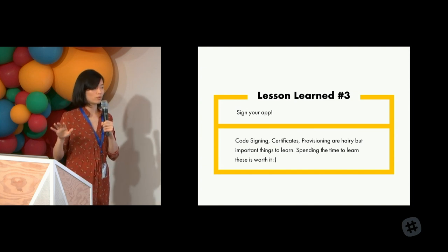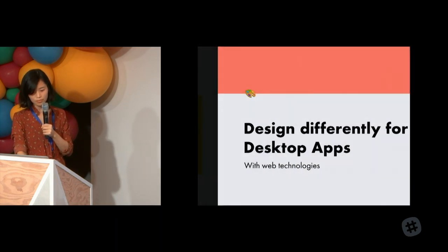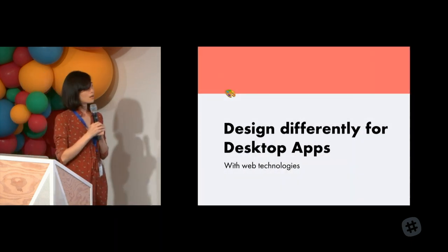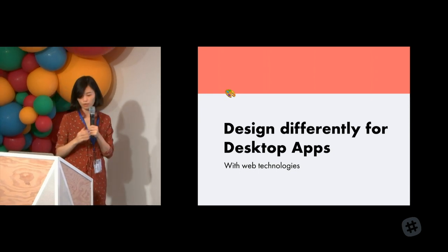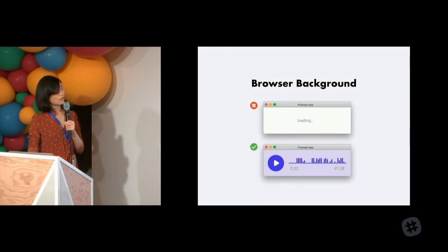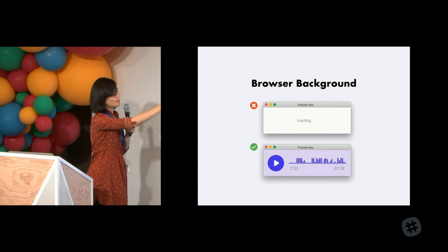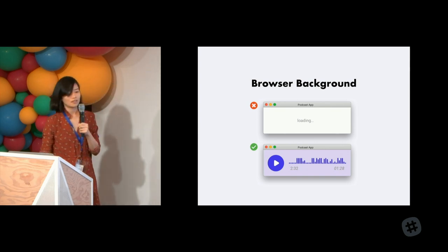The lesson learned: make sure you sign your app. Code signing, certificates, and provisioning are all really important things to learn. I would highly recommend spending some time learning them — it will be very helpful for future apps you make, whether with Swift or Electron. Let's talk about how I design differently for desktop apps using web technologies. Electron is just a browser — nothing looks more like a browser than a white background with a loading spinner in the center.